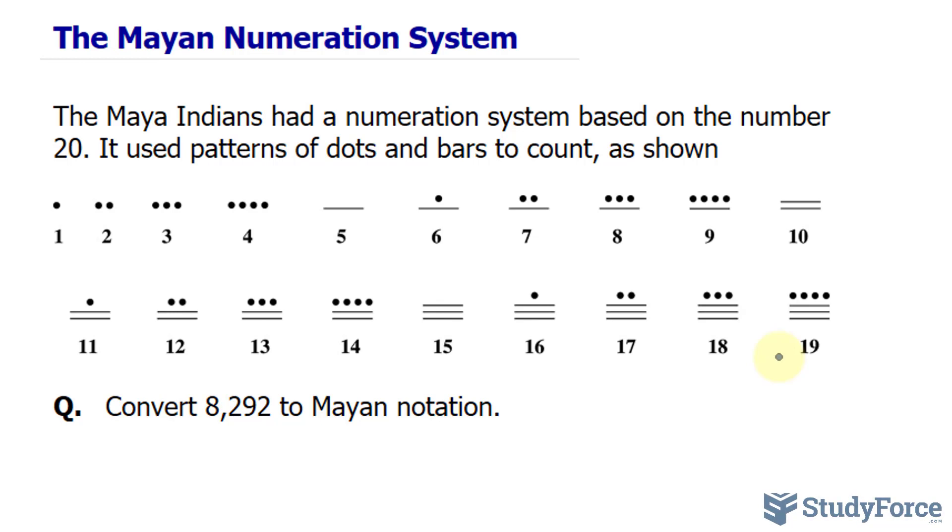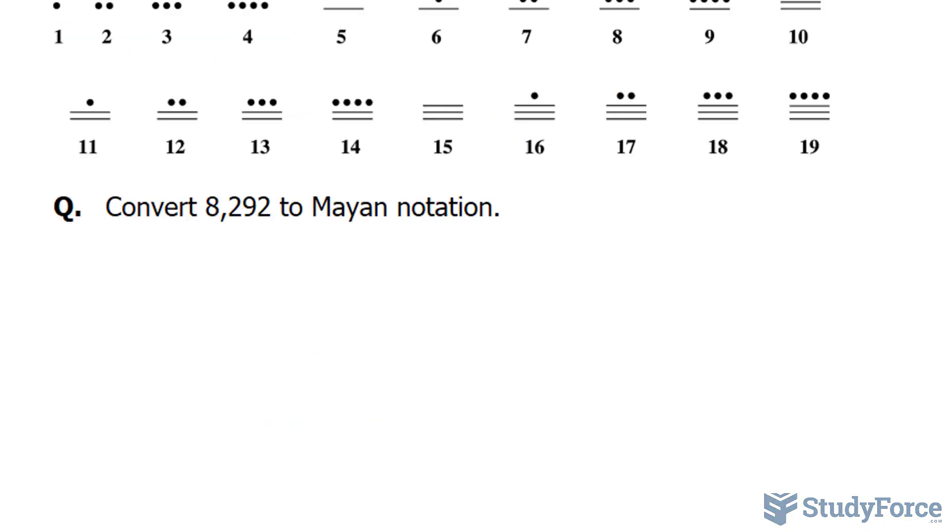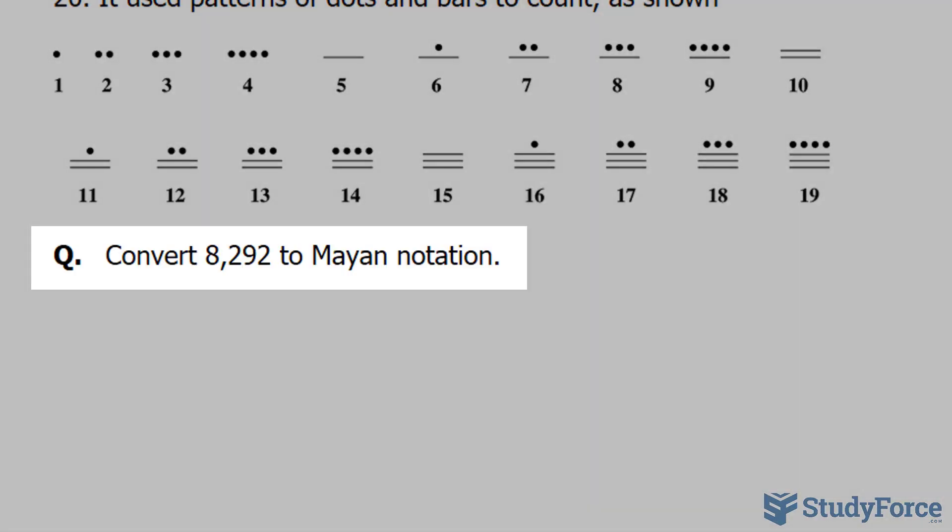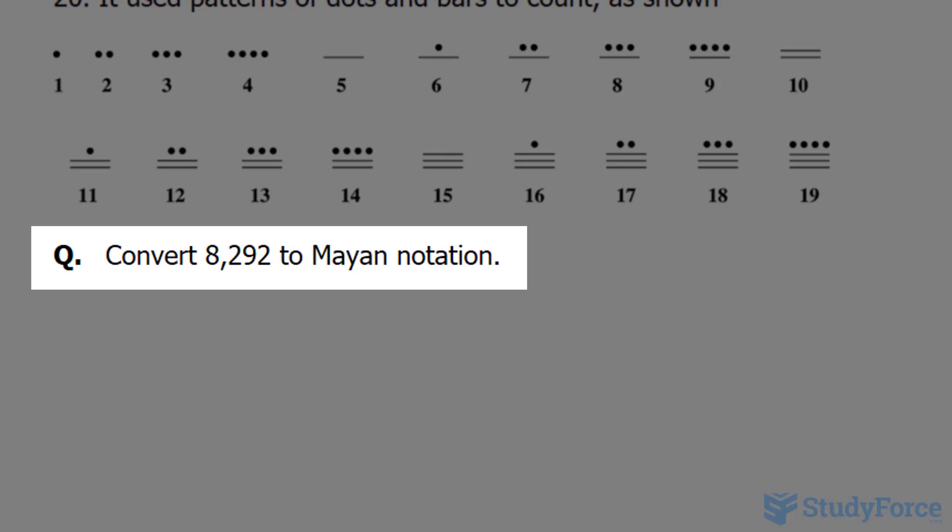The reason for this is because their numbering system was designed to keep track of time. Their annual calendar consisted of 360 days. Anyway, let's put that all into action with this example. Convert 8,292 to Mayan notation.